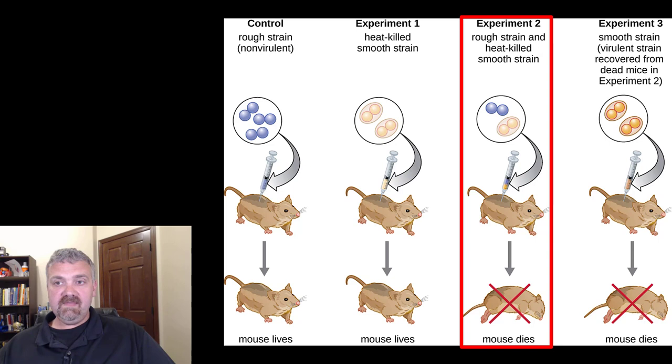Experiment two: if you take the non-pathogenic organism and mix it with dead heat-killed pathogenic organisms, so the dangerous organisms are dead and the non-pathogenic organisms are alive, and you inject it into the mouse, look what happens. The mouse dies. This is just shocking. But the key here is what actually came out of this dead mouse was living encapsulated pathogenic strains of this organism.